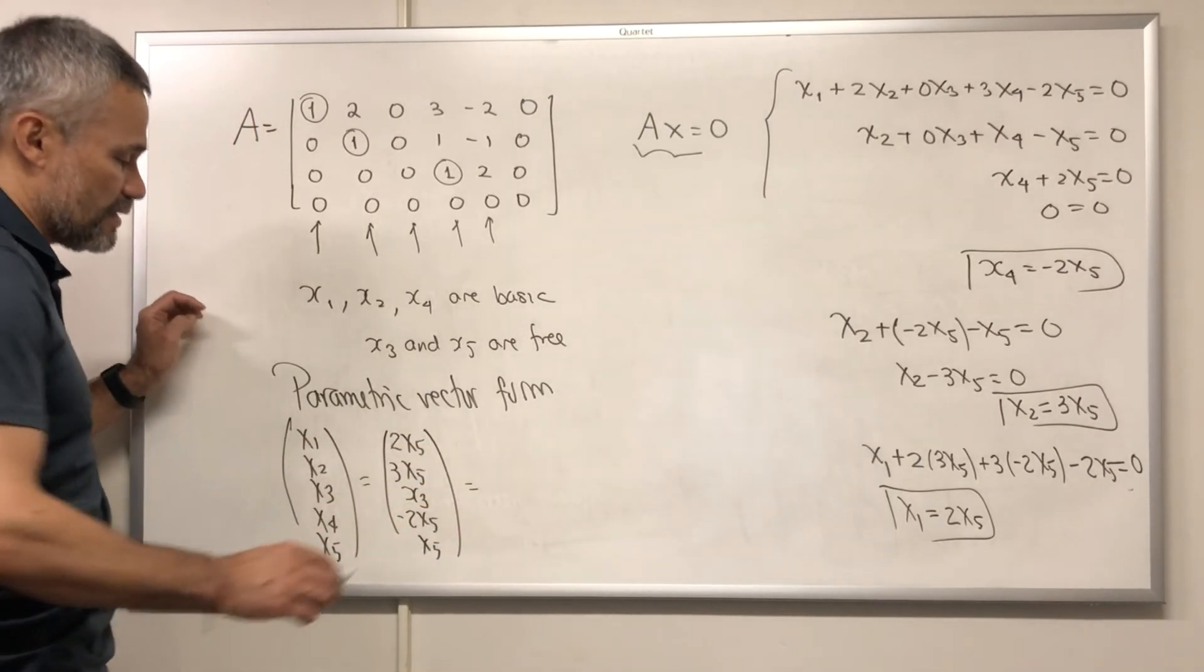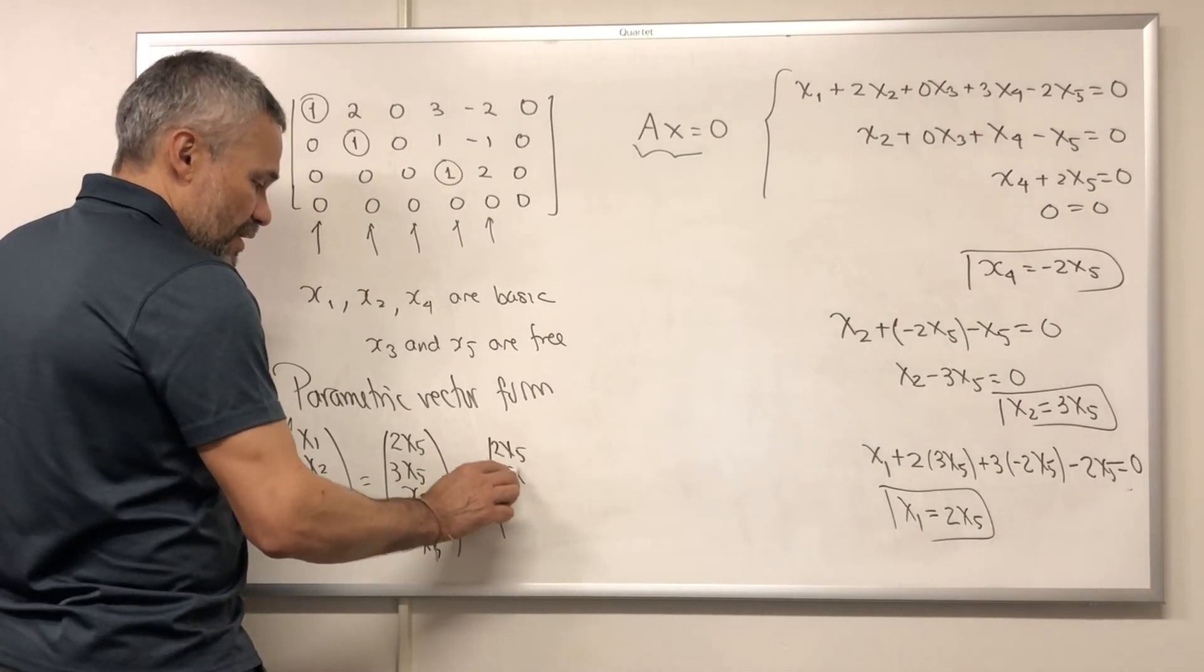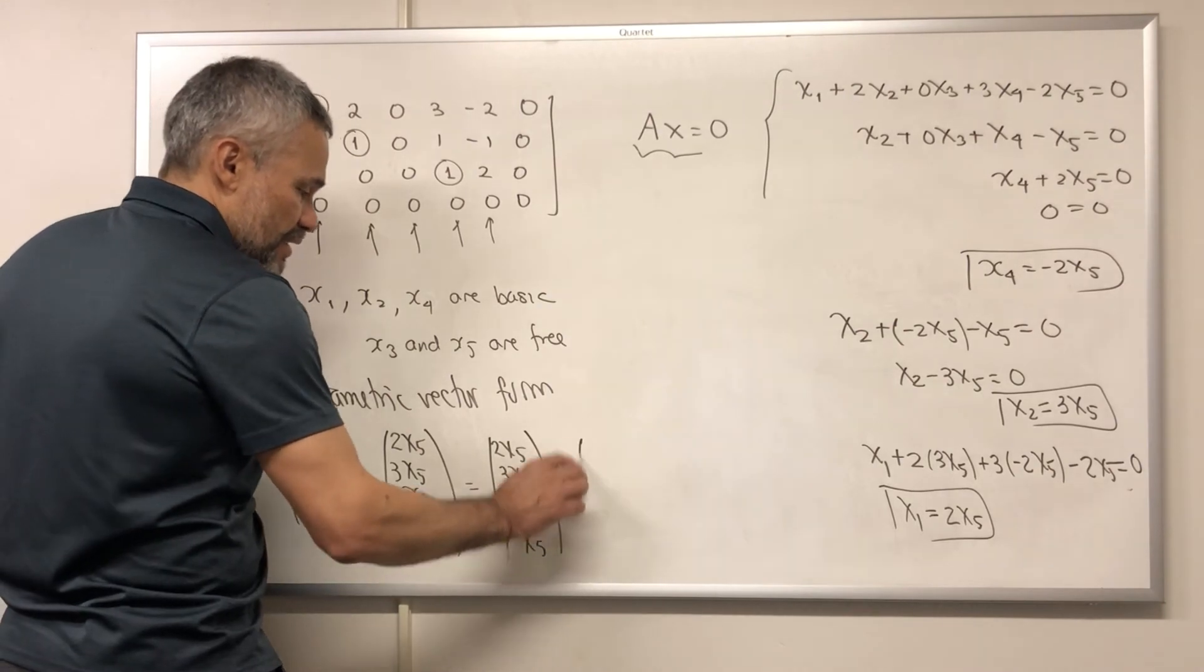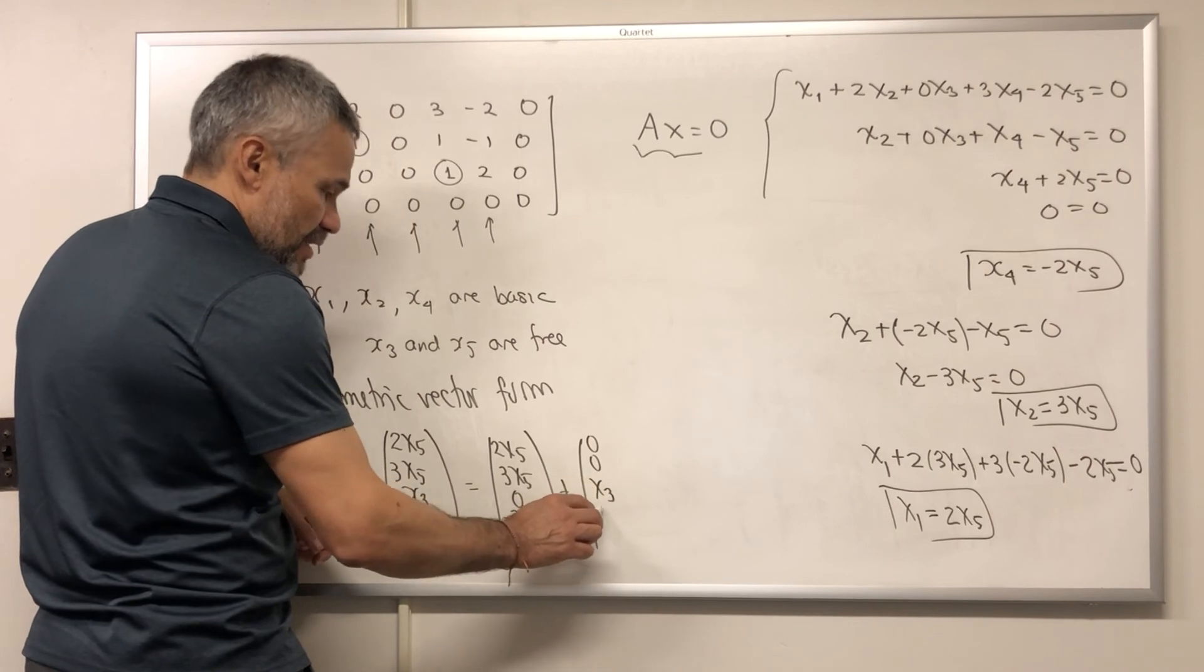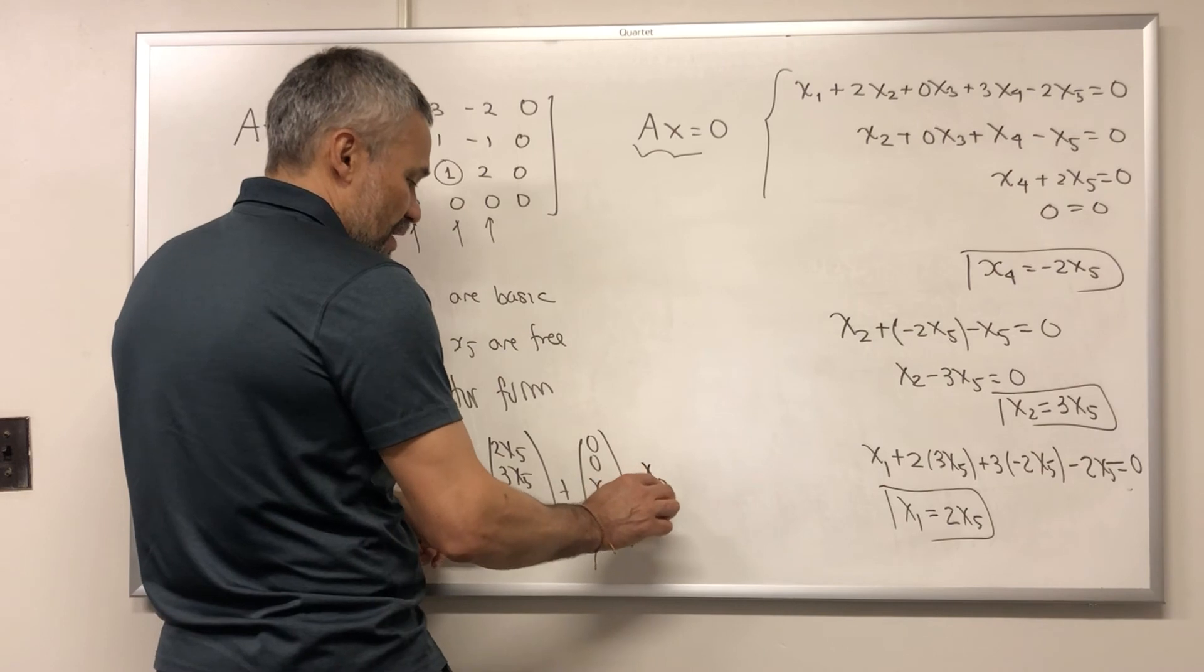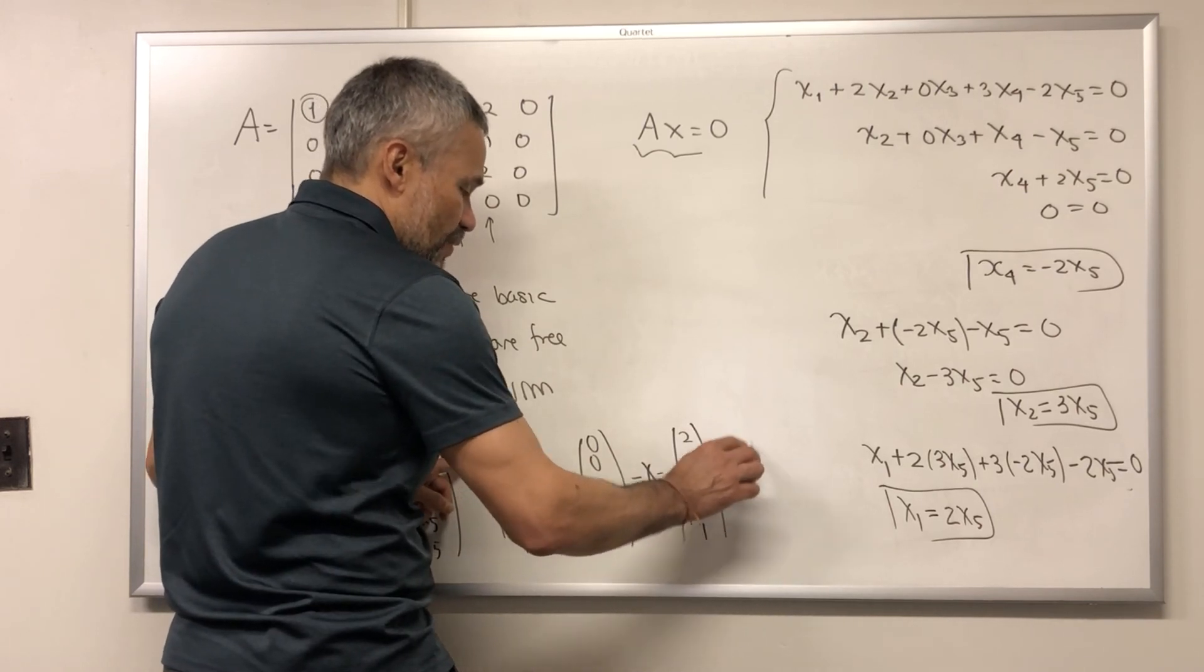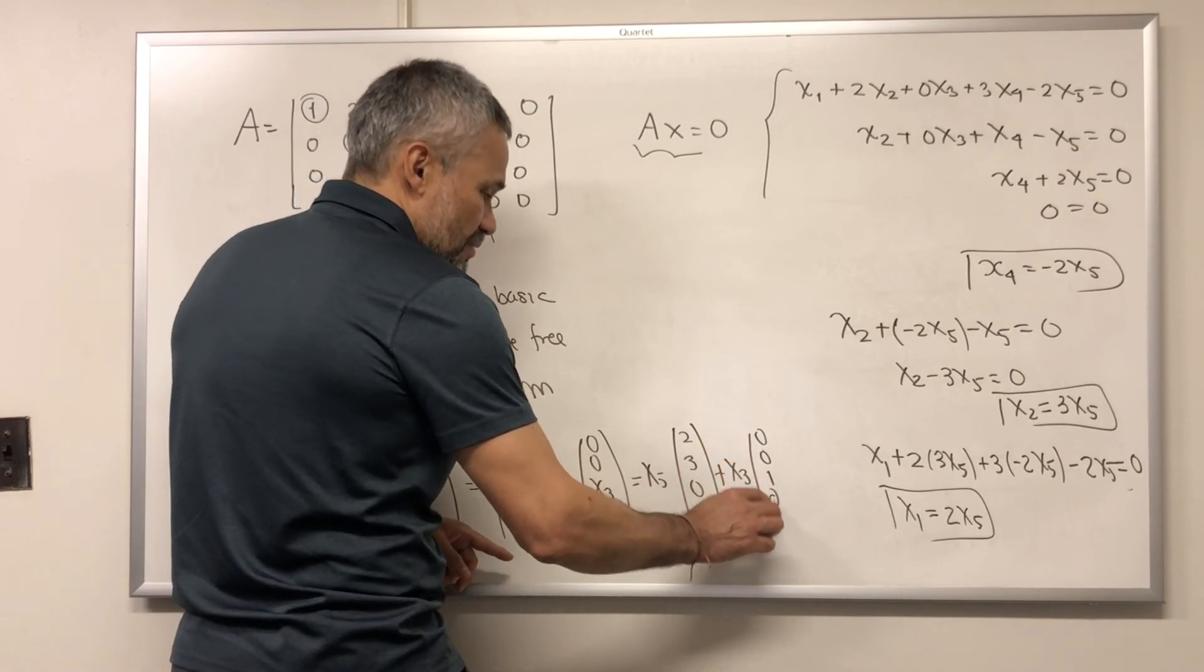Then we're going to write this in this form. We have 2X5, 3X5, 0, negative 2X5, and X5. We separate the variables. And here we have 0, 0, X3, 0, and 0. And then we write this as X5 times the vector 2, 3, 0, negative 2, and 1. Plus X3 times the vector 0, 0, 1, 0, 0.